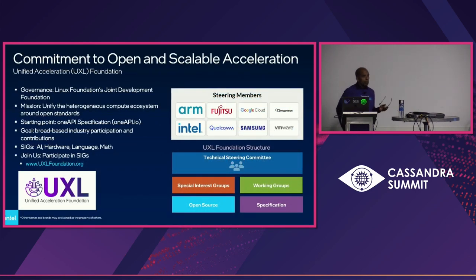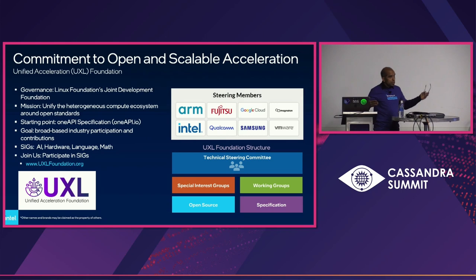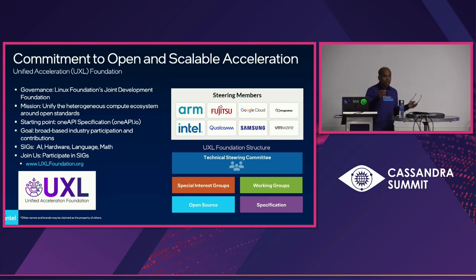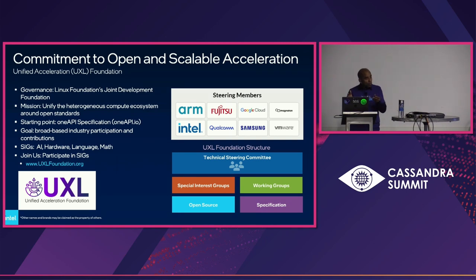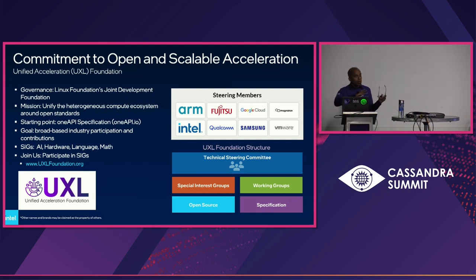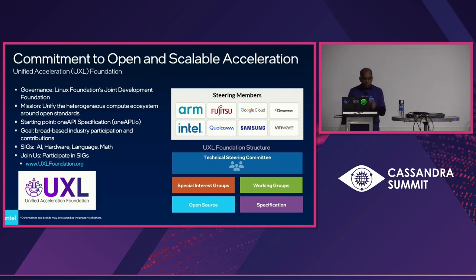Another initiative Intel announced earlier this year was the Unified Acceleration Foundation. Intel has OneAPI, which provides a single API to a range of accelerators — CPU, GPU, NPU, FPGA — so you don't have to change your application based on the underlying accelerator. We contributed OneAPI to a third-party Linux Foundation foundation. We're committed to open and scalable acceleration, and I highly encourage you to take a look and join that foundation if accelerated computing matters to you.